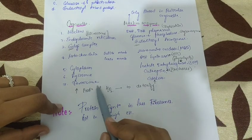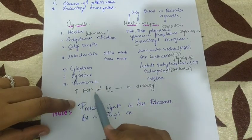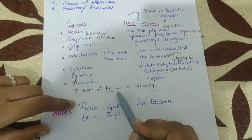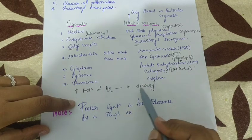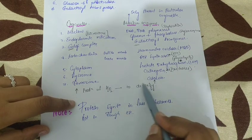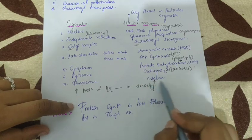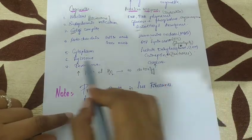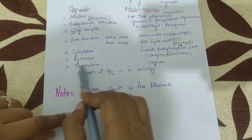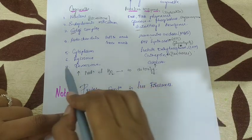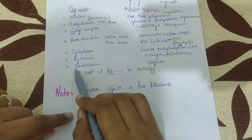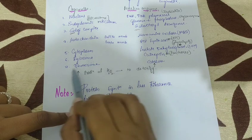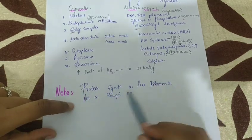For peroxisomes, there is increased production of hydrogen peroxide. Since hydrogen peroxide is toxic, catalase enzyme is required to detoxify it. Catalase is present only in peroxisomes, so catalase is the marker enzyme for peroxisomes.